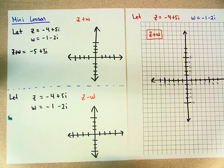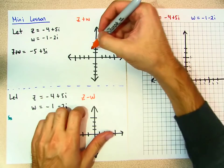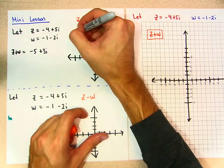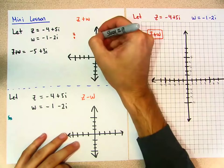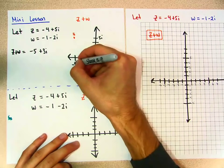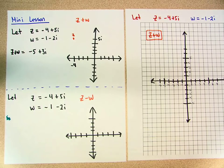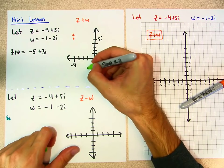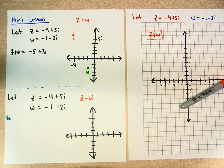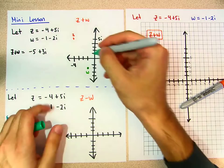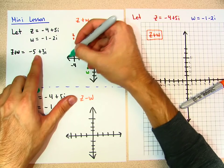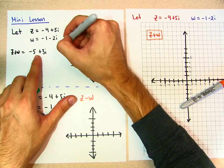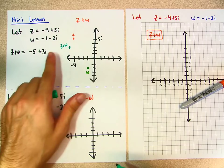Here, where is my z? My z is negative 4 plus 5i, so this is it. This is my z. Let this be 5i and this is negative 4. And then where's my w? w is negative 1 minus 2i — this is my w. And then where would my z plus w be? It would be negative 5 plus 3i, right here. And that's my z plus w.